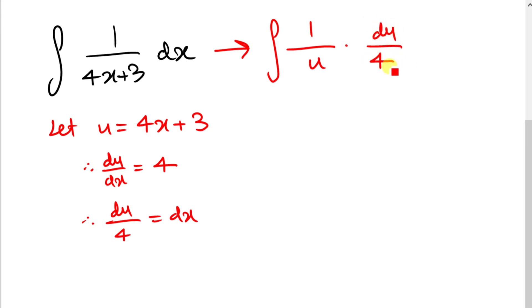Now the cool thing is, when you've got a constant like 4, or a quarter, we can take it outside the integral. So it becomes 1 over 4, the integral of 1 over u du.